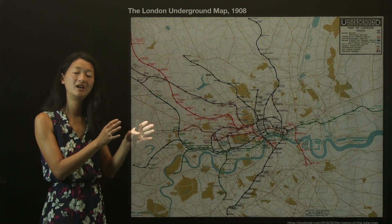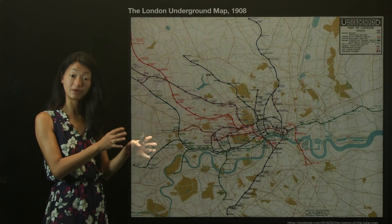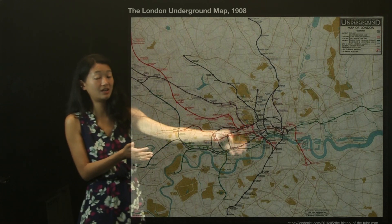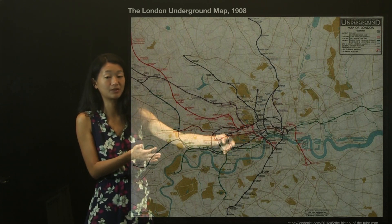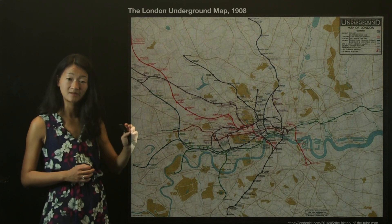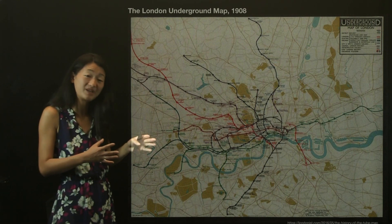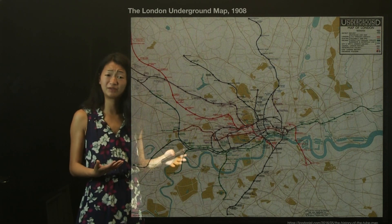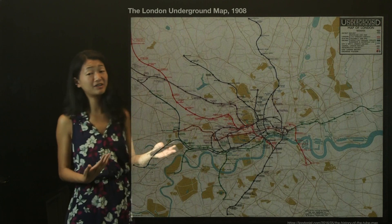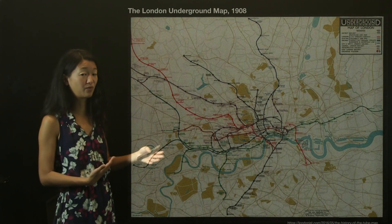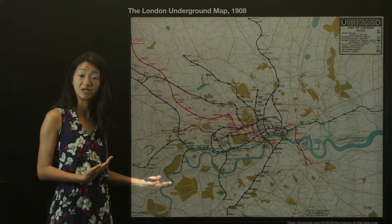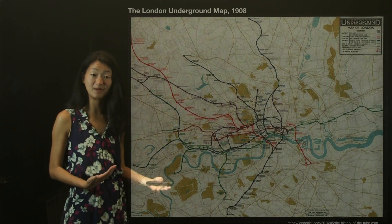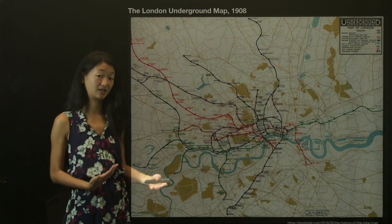It doesn't tell you easily and straightforwardly the things you actually want to know, like what station do I get on in the middle so I can transfer to the red line to this other place. That information is really obscure. But it's giving you extra information you may not actually care about, like where the station is relative to the river — if you're actually on the train, that might not be what you're focusing on at the moment.